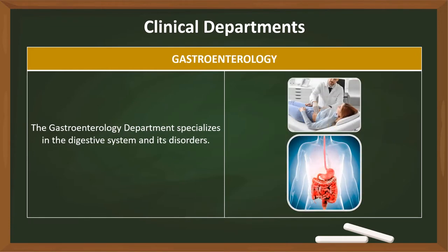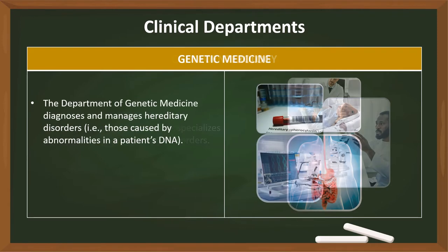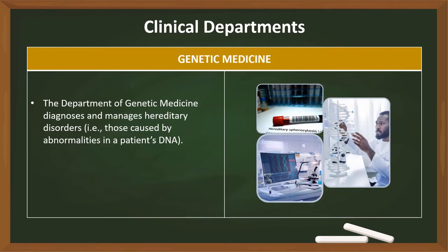The gastroenterology department specializes in the digestive system and its disorders. The department of genetic medicine diagnoses and manages hereditary disorders — that is, those caused by abnormalities in a patient's DNA. Genetic medicine is also called medical genetics.